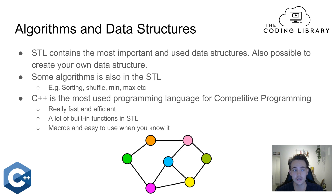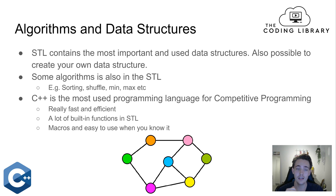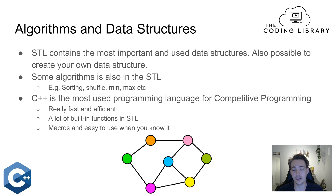Especially when talking about algorithms and data structures, the C++ standard library is really good. I also have a video on algorithms and data structures if you're interested — covering what data structures are, how to create your own, and going over different sorting algorithms and how they work. The STL is just an efficient implementation of those algorithms and data structures.